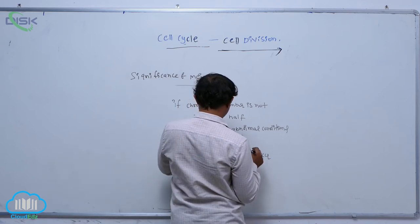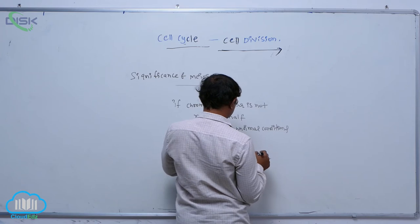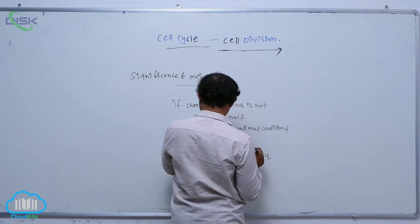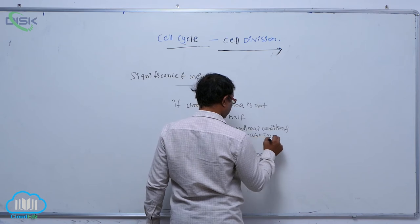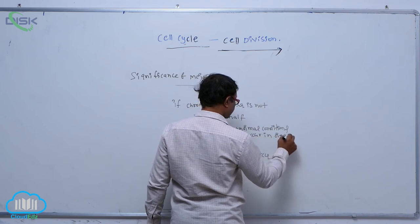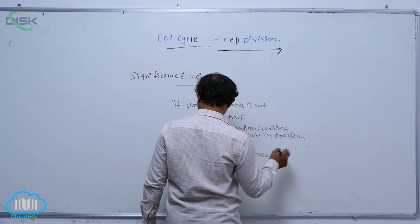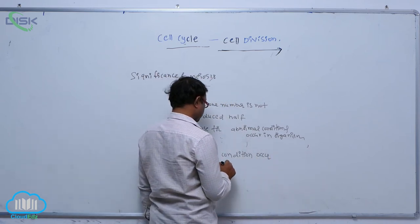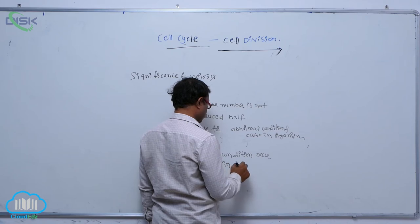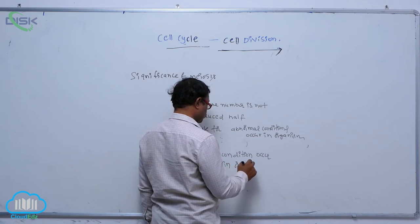By that cause, abnormal conditions occur in organisms. So by the result, polyploidy condition occurs in organisms.